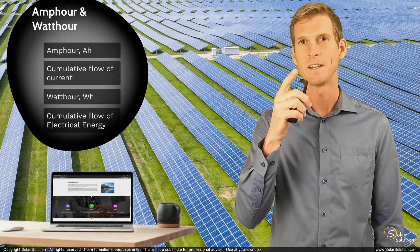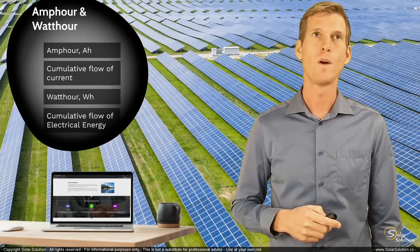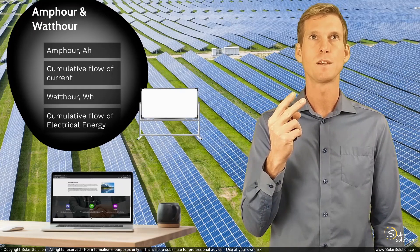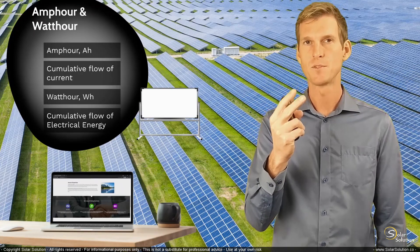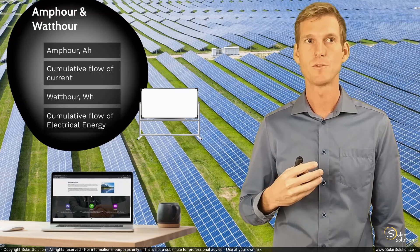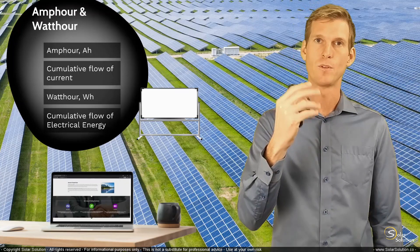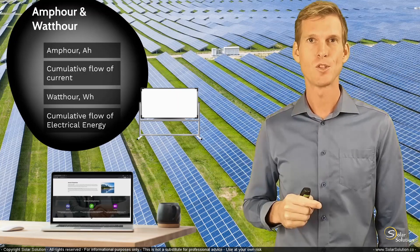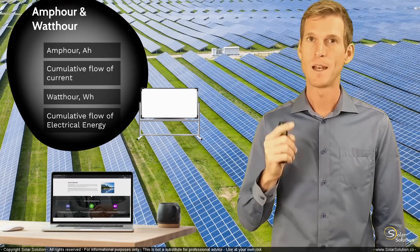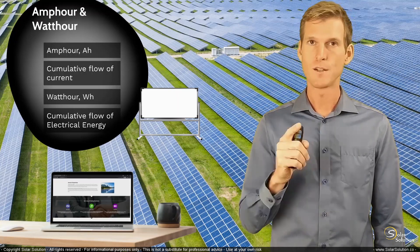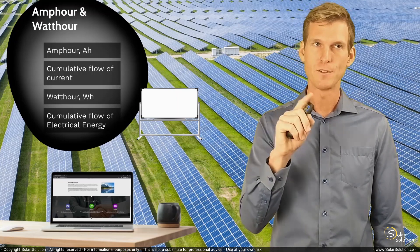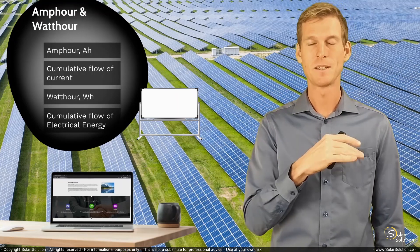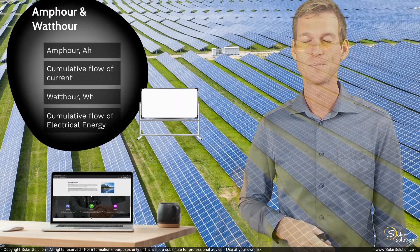I think I can best explain this by going to the whiteboard. I want to give you two specific calculation examples of what could happen in your daily life. We are going to charge your phone and we are going to charge your electric vehicle. This will take a few minutes. If you're not interested in numbers, then maybe you need to skip through this section.